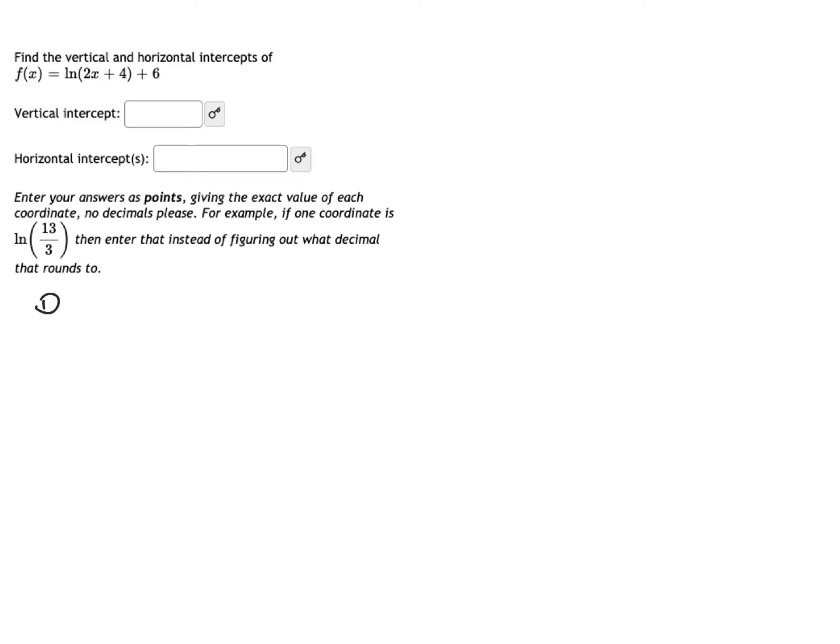To find vertical intercepts, the vertical intercept happens when the input is zero, so I need to figure out what the output is going to be when the input is zero. f(0) is the log of two times zero plus four plus six, and so that's just the natural log of four plus six. So the answer to this question is the point where the input is zero and the output is natural log of four plus six. No further calculations are needed.